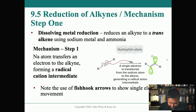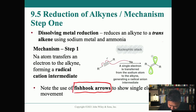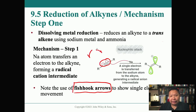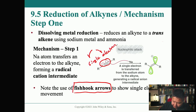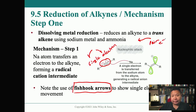Remember that fishhook arrows — arrows with a half-arrowhead — always mean a single electron is moving, as opposed to full arrows which show a pair of electrons moving. This is why it's radical chemistry. Unlike regular chemistry where you move pairs of electrons all flowing in one direction, in radical chemistry, fishhook arrows can go away from each other (bond breaking), come toward each other (bond forming), or flow sequentially.